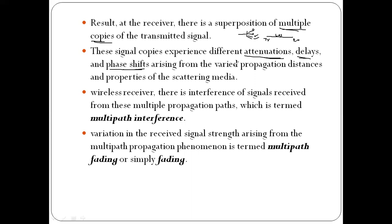Based on the path length, the signal varies. Properties of the scattering media also affect the signal. At the wireless receiver, there is interference of signals received from multiple propagation paths, which is termed multipath interference.